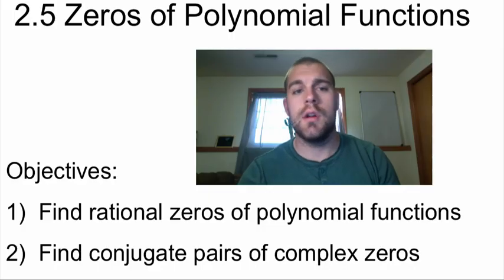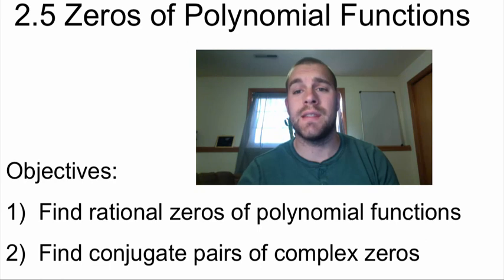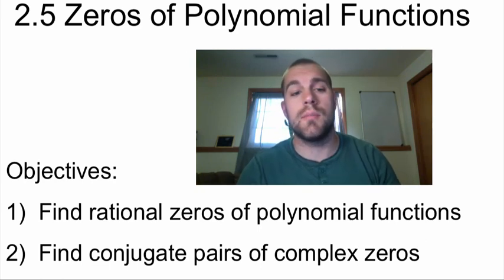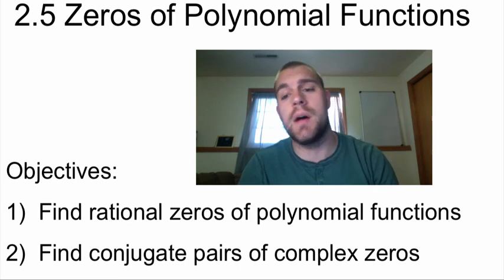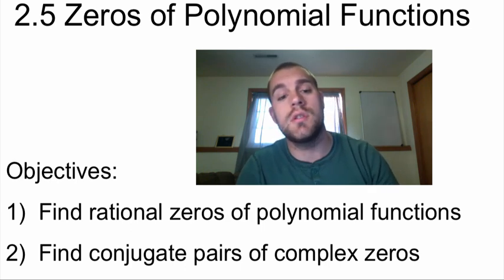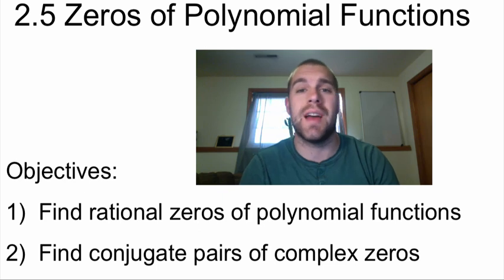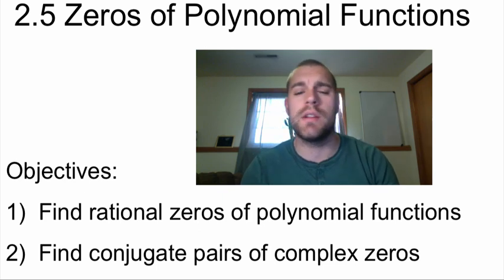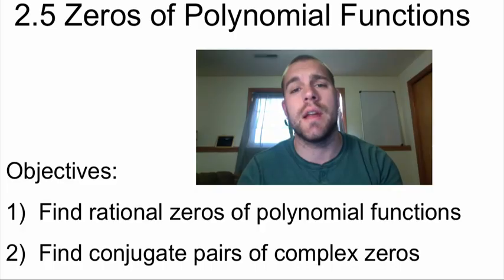Hey guys, Mr. Backberg here. Lesson 2.5 is all about finding zeros of polynomial functions. Our two objectives: number one, we are going to find rational zeros of polynomial functions, and number two, we're going to find conjugate pairs of complex zeros, and then we'll actually do something else with those zeros at the very end.